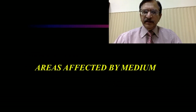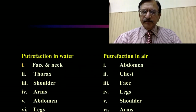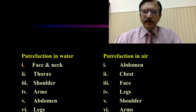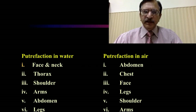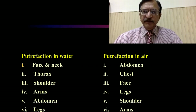Areas affected by the medium: in water, the face and neck are first affected, then thorax and shoulders, then arms, abdomen, and legs. In air, the abdomen is first, then chest, face, legs, shoulders, and arms. This is the sequence of putrefaction which the body follows in water and air — these are the features which differ between the two media.